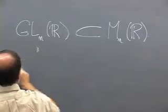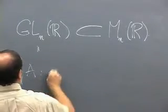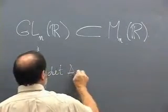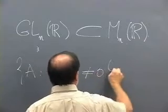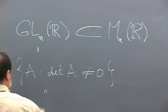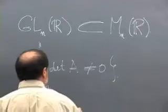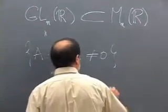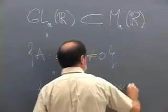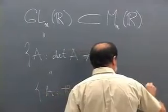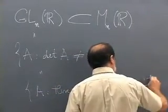This subset consists of all matrices A such that the determinant of A is not equal to 0. Or equivalently, A such that there is an inverse matrix A inverse.